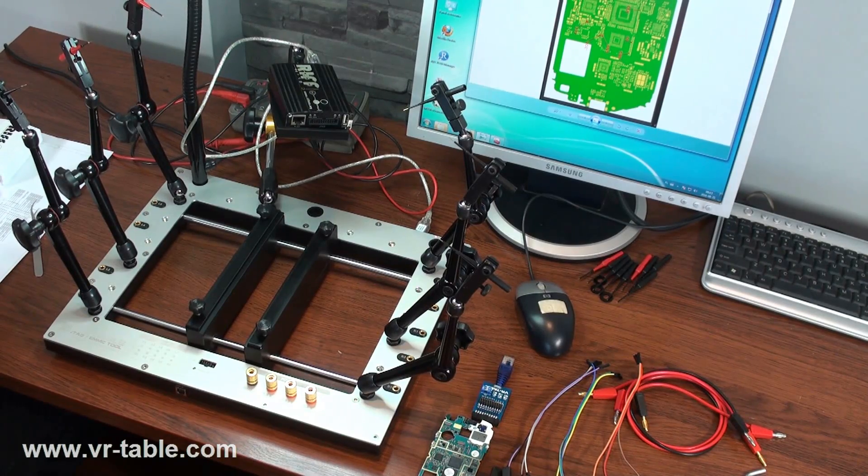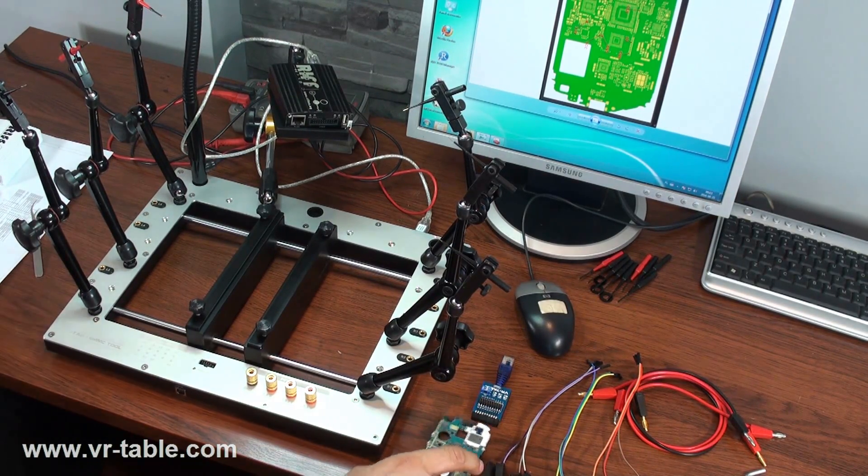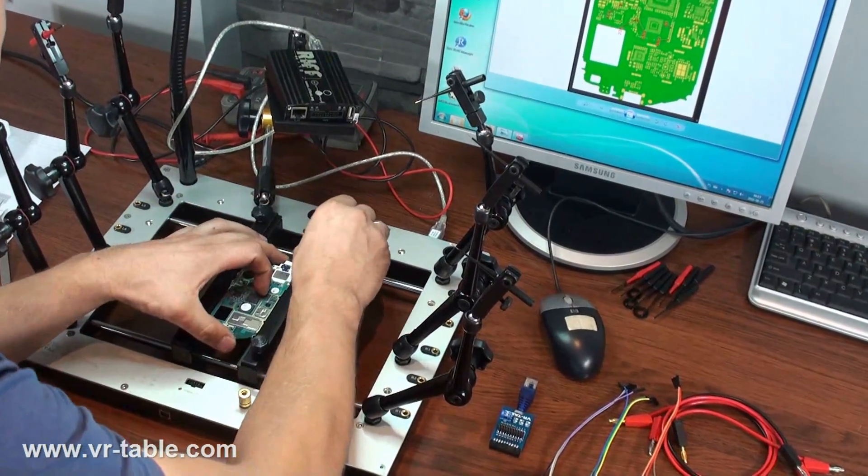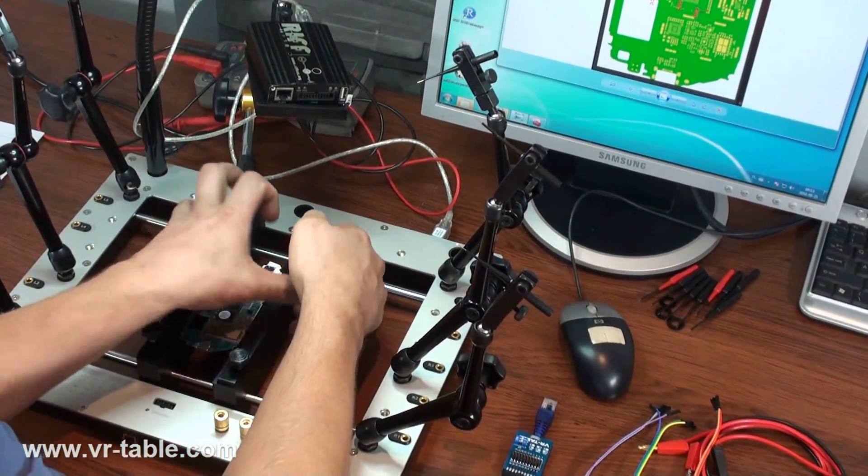Hello, today we will demonstrate how to use the VR table for phone memory dump using the eMMC ISP interface from Samsung Galaxy S3 mini i8190.